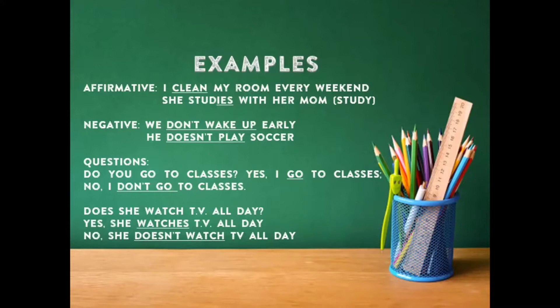En la pregunta preguntamos con el you, y al responder tenemos que responder con el I. En el siguiente ejemplo: does she watch TV all day? Fíjense que en la pregunta solo colocamos el does y el verbo queda en presente. Cuando es la respuesta positiva, ahí sí colocamos las reglas de tercera persona: yes, she watches TV all day. Y en la negativa utilizaremos el doesn't porque estamos con el she. Entonces sería: no, she doesn't watch TV all day — ella no ve televisión todo el día.